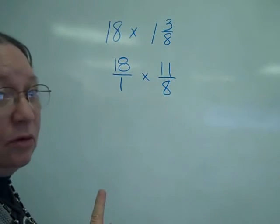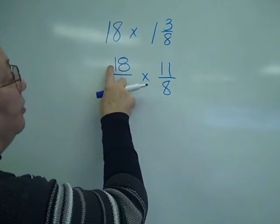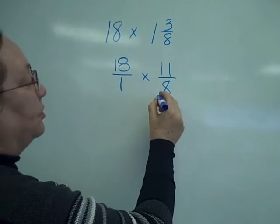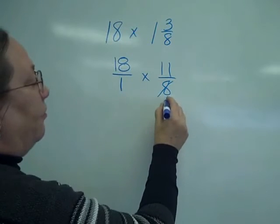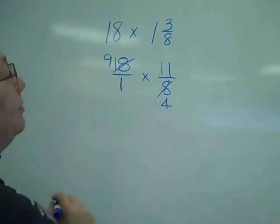Okay, canceling is a little more difficult this time. I can reduce both 8 and 18 by 2's. 2 goes into 8 4 times. And 2 goes into 18 9 times.